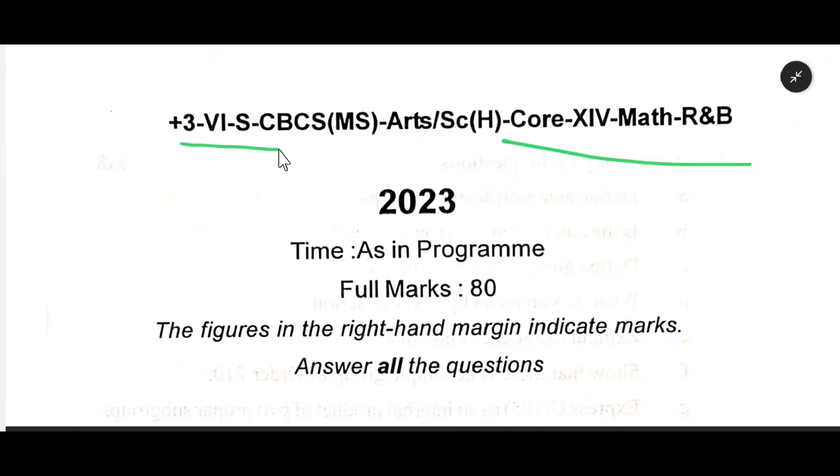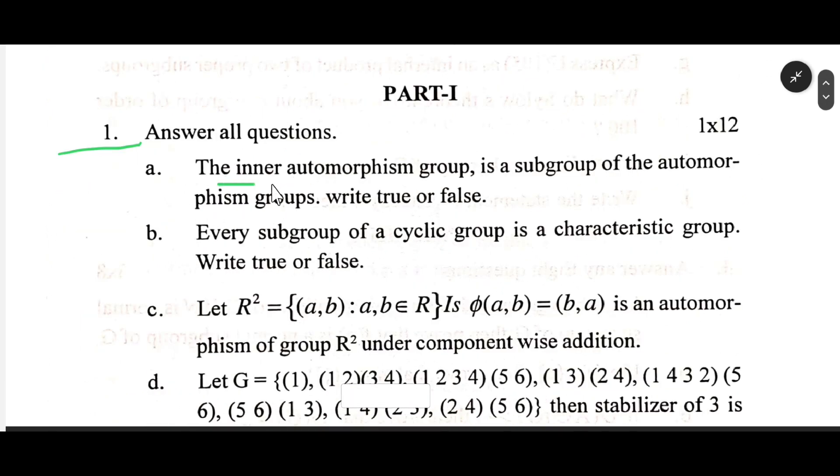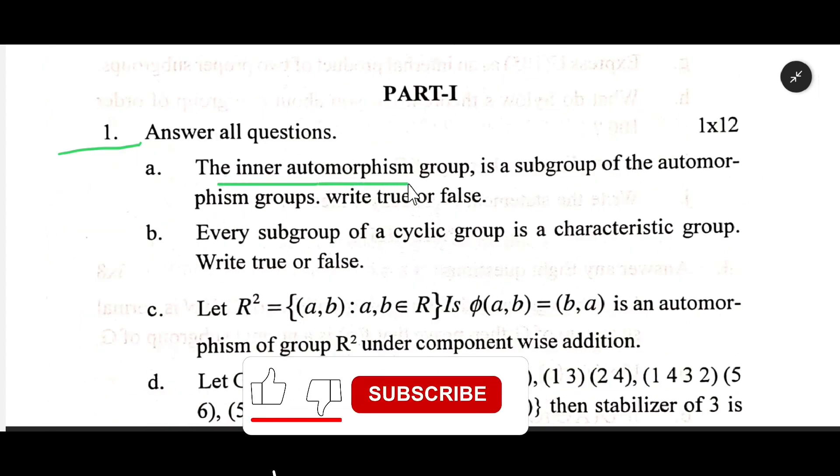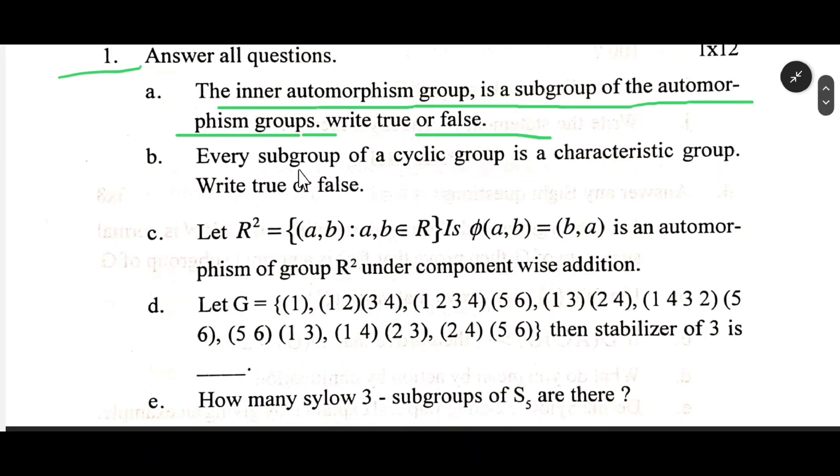Core 14 Math on our 6th semester. Number 1: The inner automorphism group is a subgroup of the automorphism group. Write true or false. Every subgroup of a cyclic group is a characteristic group. Write true or false.